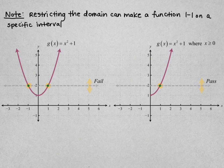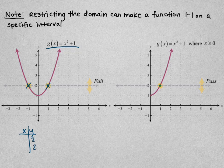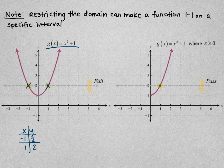Now if we look at g(x) = x² + 1, we see it also fails the horizontal line test. In table form, we've got y = 2, but two different domain values: x = negative 1 and x = 1. If you see two x's with the same y, that function is not one-to-one, which means the inverse does not exist.